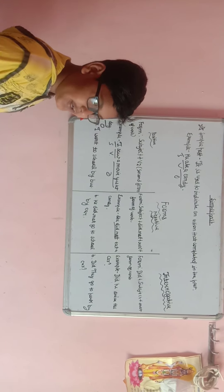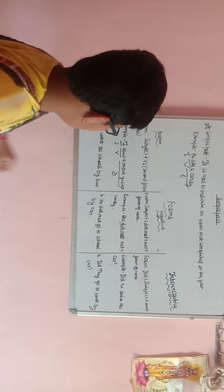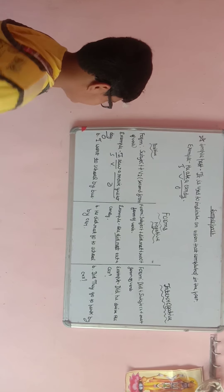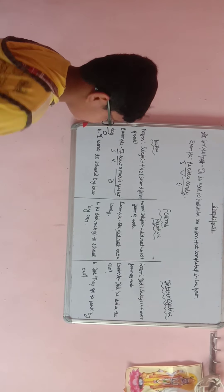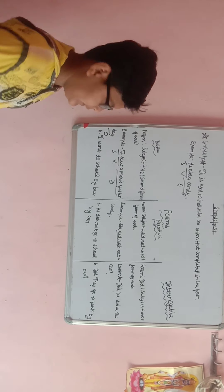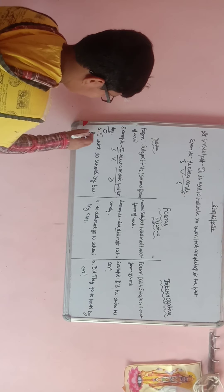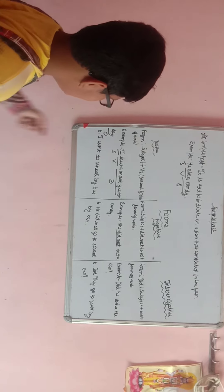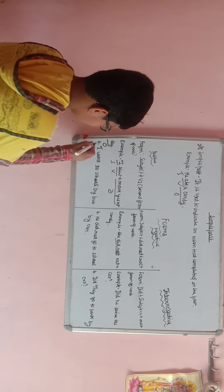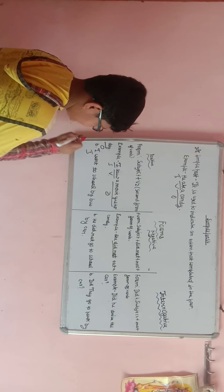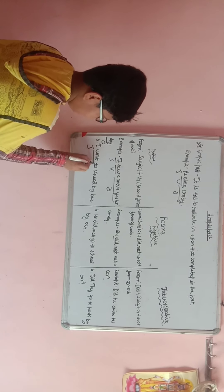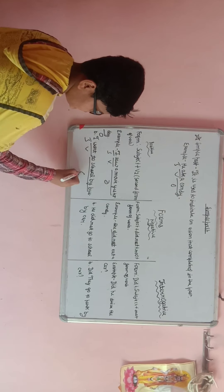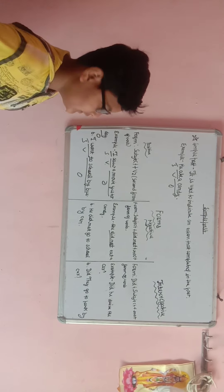We can take one more example: 'I went to school by bus.' Here 'I' is the subject, 'went' is the verb in second form, and 'to school by bus' is the object.